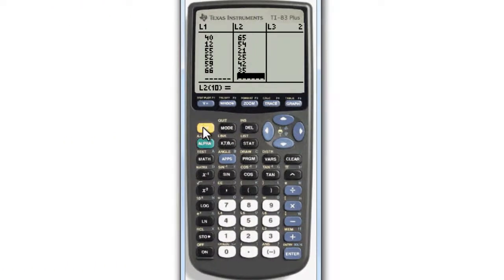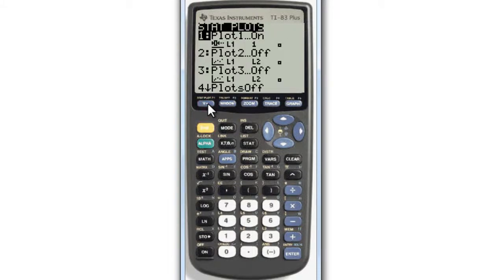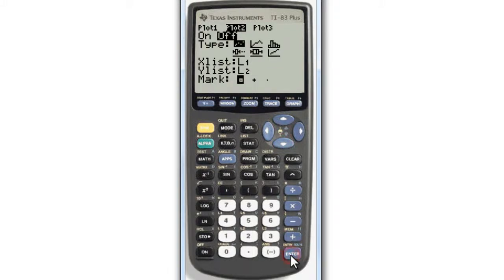Then go back into STAT plot by pressing 2nd, Y equals. We want another STAT plot to be turned ON. Go into this one, and it's currently OFF. With the cursor on ON, press ENTER, and that turns it to ON. Going down into the TYPE menu, scroll over until you see the box plot with outliers, and press ENTER.